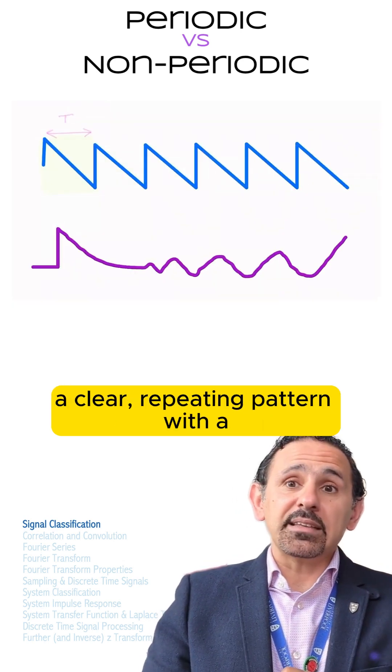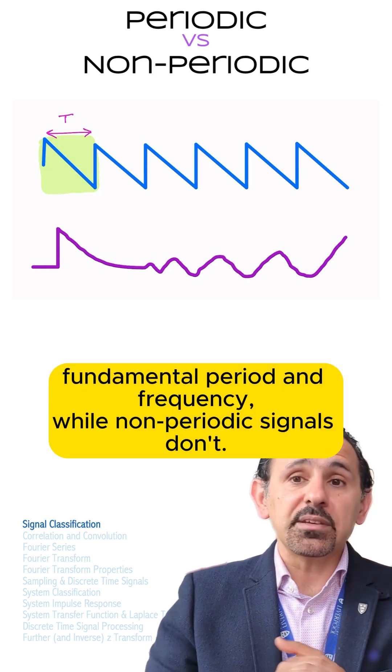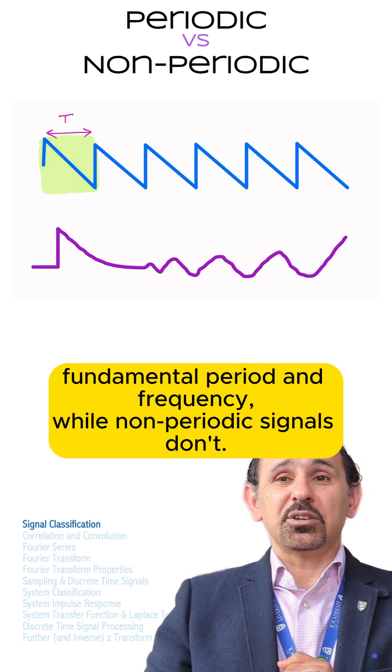So remember, periodic signals have a clear, repeating pattern with a fundamental period and frequency, while non-periodic signals don't. Thank you.